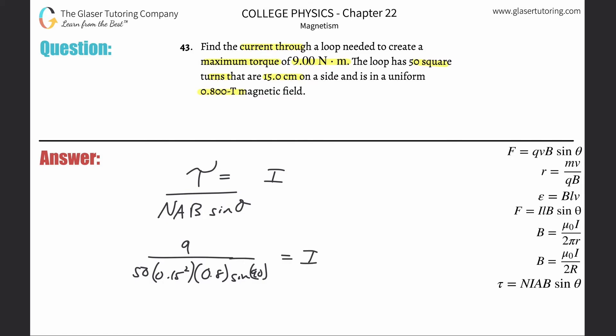So 9 divided by 50 times 0.15 squared times 0.8. And sine of 90 is just 1, so that works out to be 10 amps.